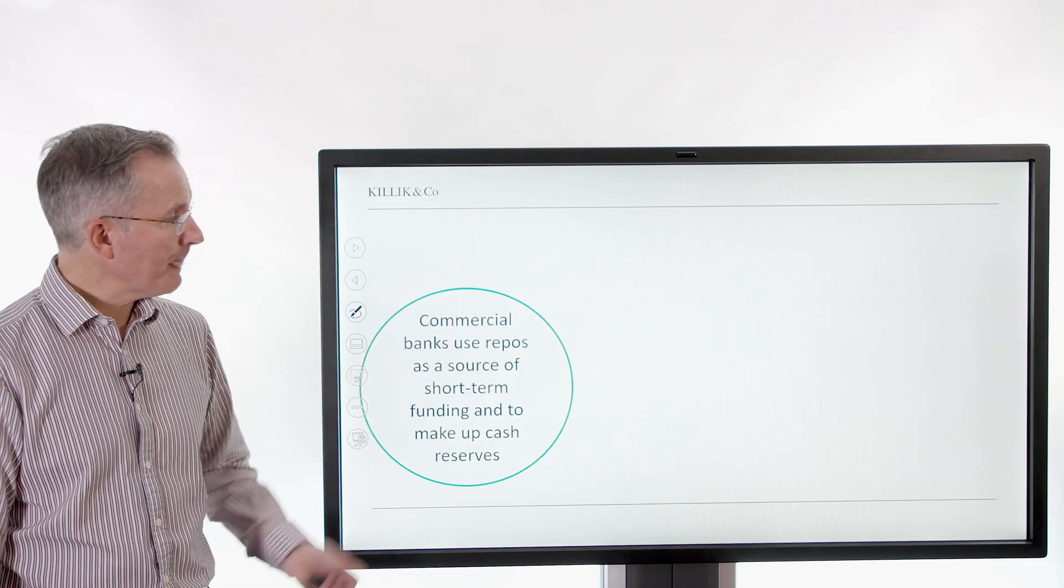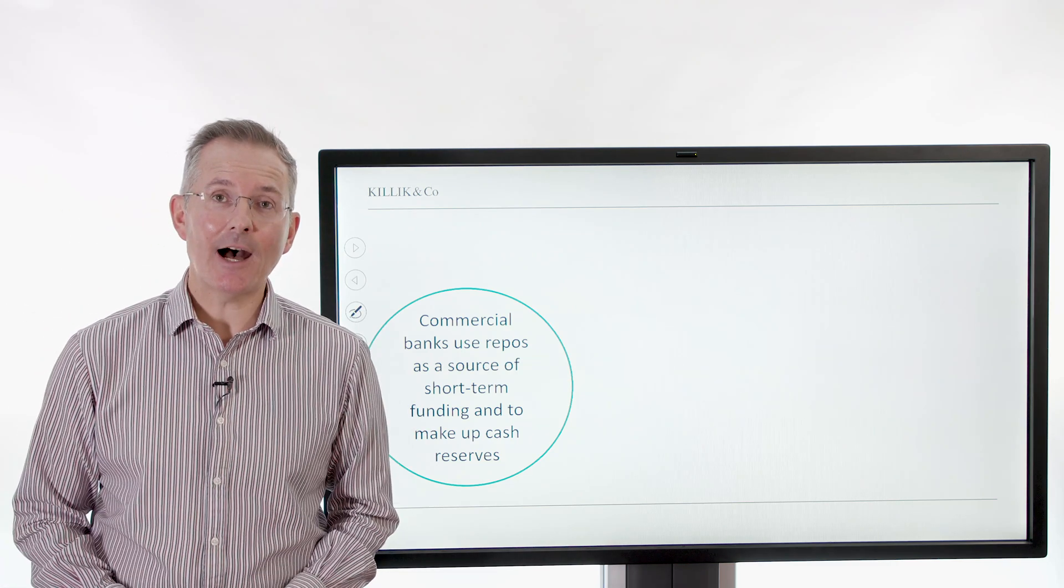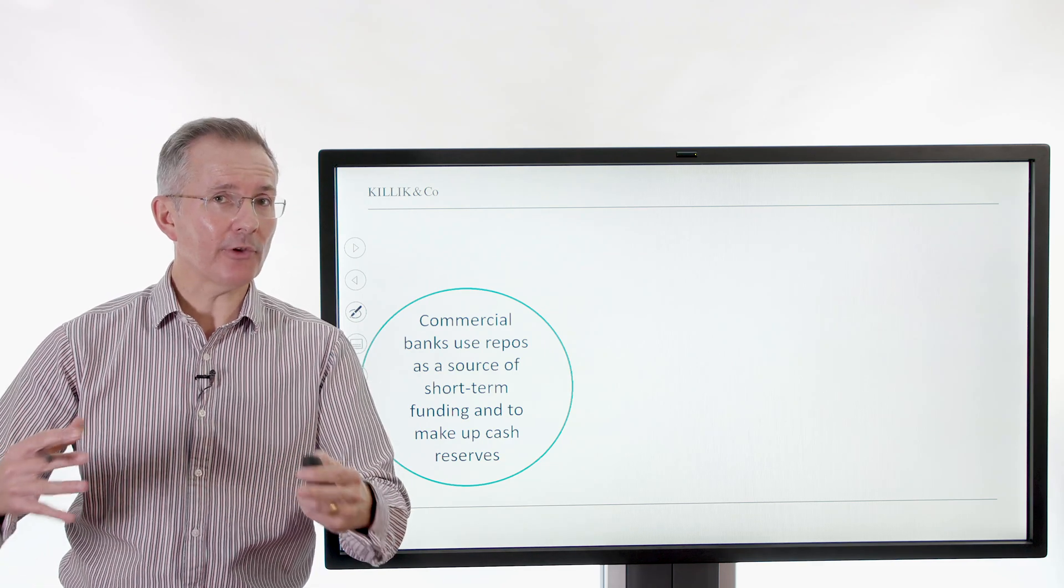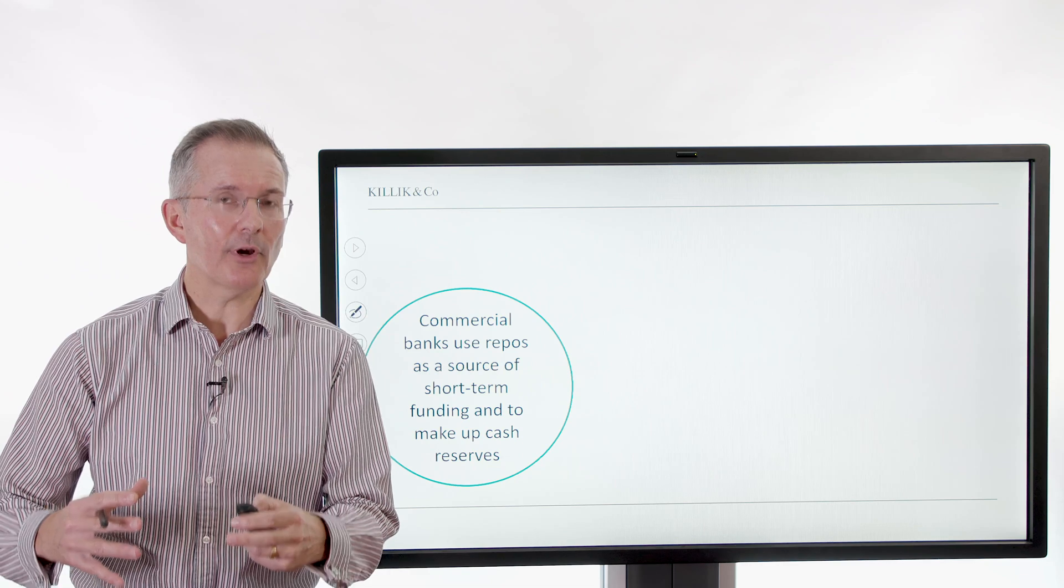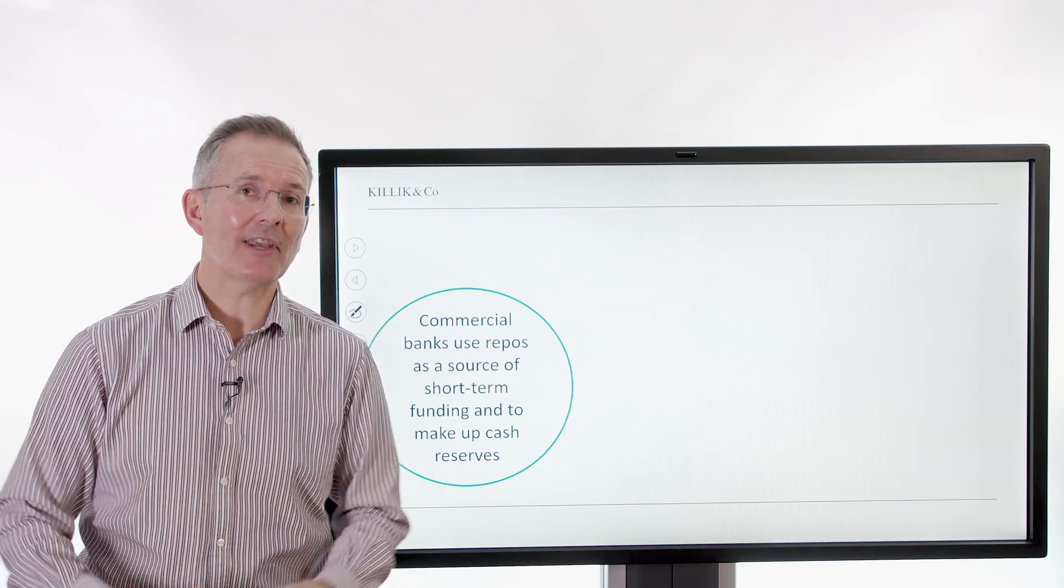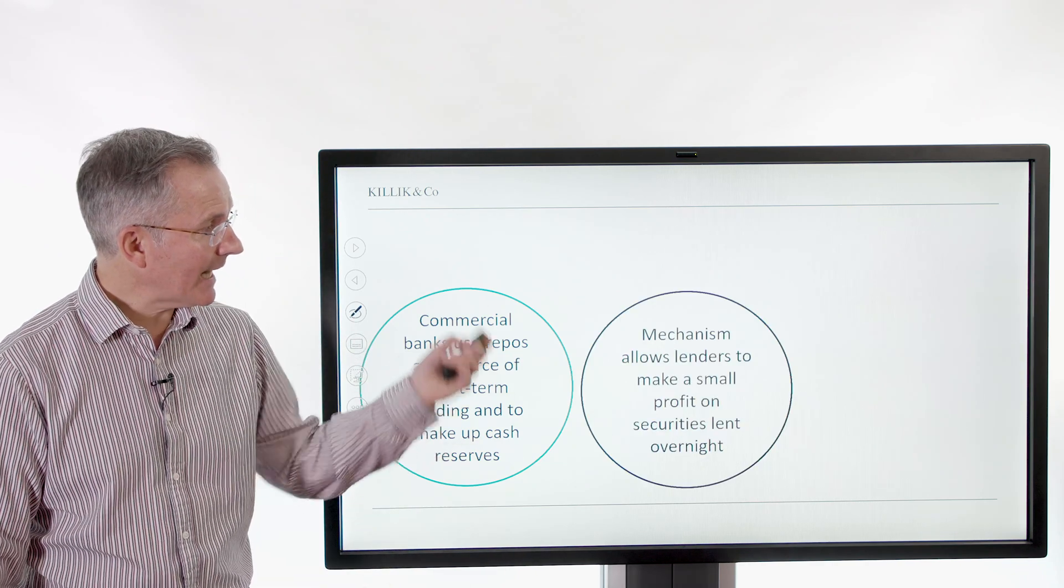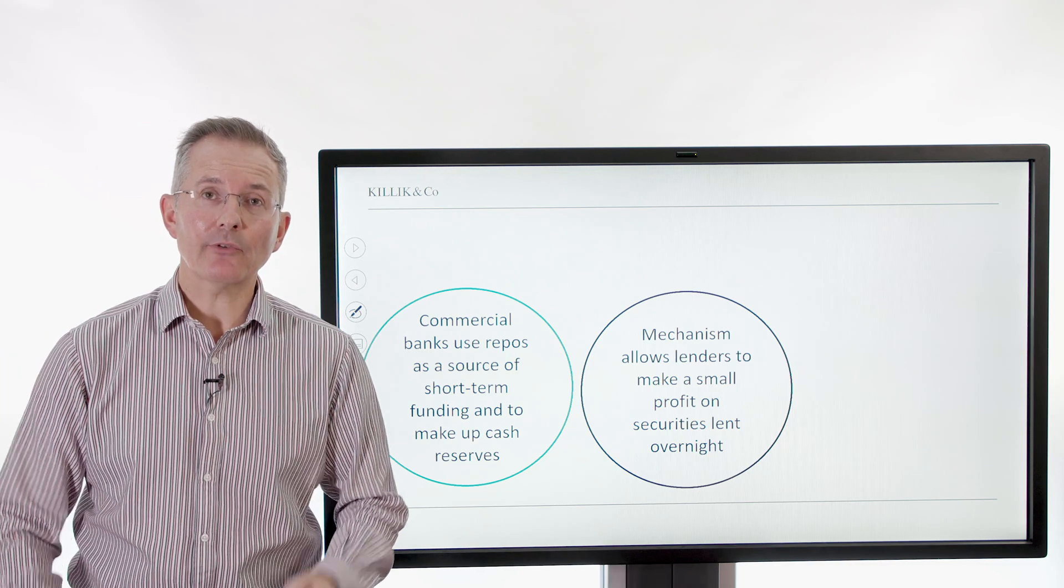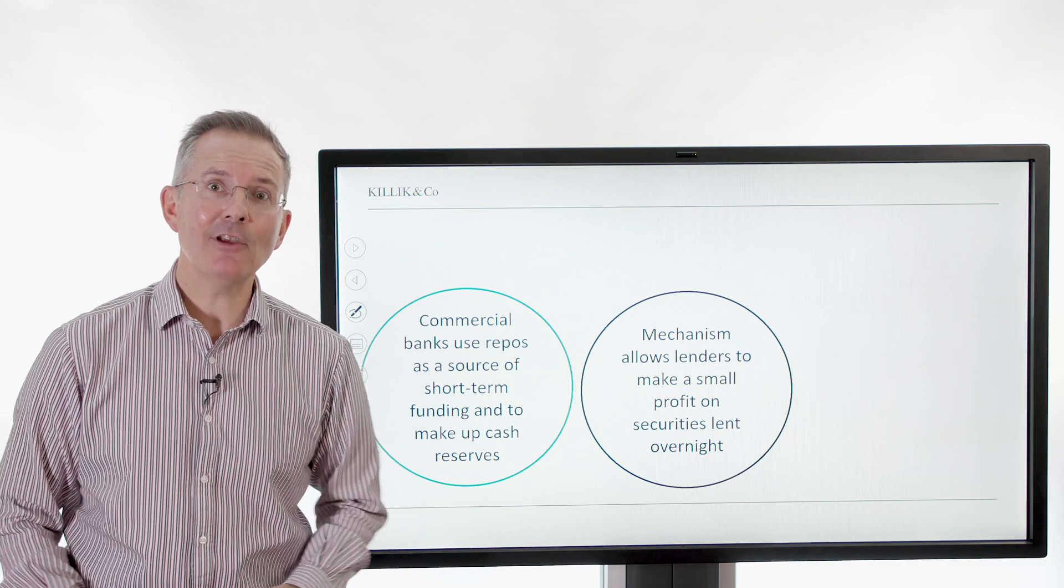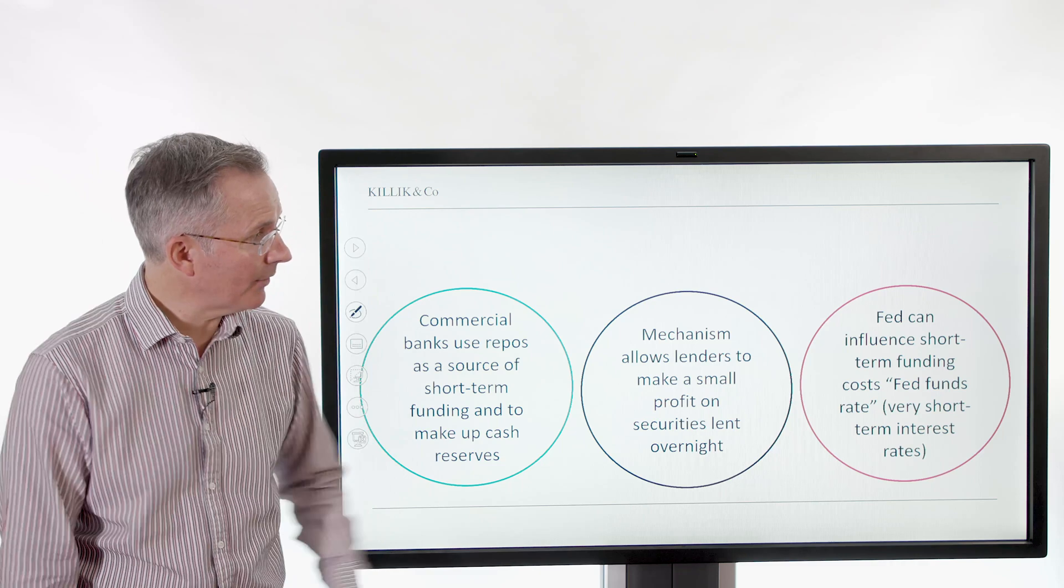Now what's the point? So commercial banks use repos as a source of short-term funding and to make up their cash reserves. So they're useful, they're flexible. For both parties, different motivations, one temporarily short of cash, the other temporarily, perhaps short of a particular IOU. The repo makes quite a lot of sense, the reverse repo. It allows lenders to make a small profit on securities lent overnight. So there's a little bit of an extra turn, if you like, on securities that would otherwise be sitting inactive, lending them out creates that little bit of extra interest that I mentioned earlier on.